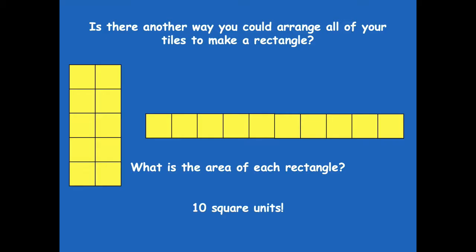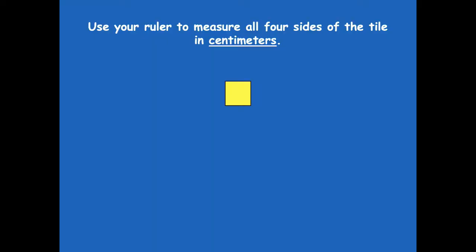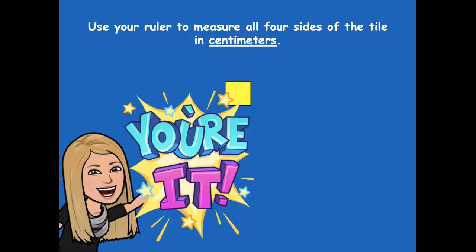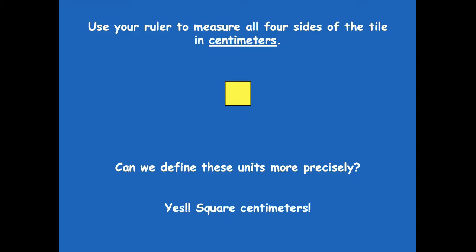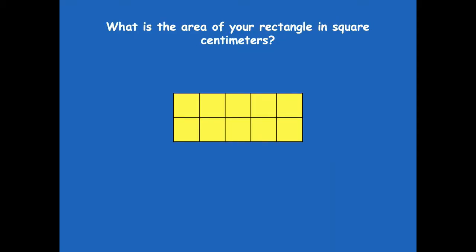Remember, area is just the space each shape takes up. Use your ruler to measure all four sides of the tile in centimeters — make sure you're finding the centimeter side of your ruler and measure each side of your centimeter tile. So how can we define these units more precisely? Instead of just saying they're a square unit, now that we've measured them in centimeters we can say they are square centimeters. What's the area of your rectangle in square centimeters? Ten square centimeters — it takes up ten square centimeters of space.